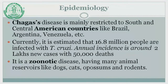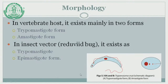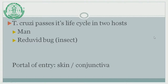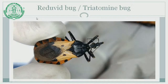Trypanosoma cruzi is mainly present in American countries like Brazil, Argentina, and Venezuela. It is a zoonotic disease, having many animal reservoirs such as dogs, cats, possums, and rodents. Morphologically, in the invertebrate host it exists mainly in two forms: trypomastigote and amastigote. In the insect vector — the reduviid bug or triatomine bug — it exists in trypomastigote as well as epimastigote form. The vector is the triatomine or reduviid bug, and the infective form is the trypomastigote. The portal of entry of the parasite is skin or conjunctiva.